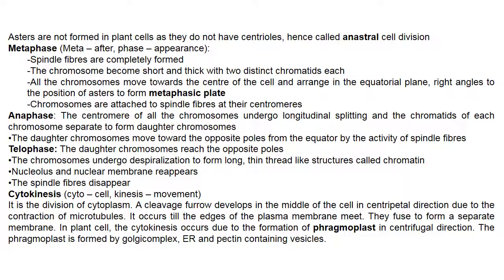Metaphase asters are not found in plant cells as they do not have centrioles, hence called anastral cell division. In metaphase of mitosis, 'meta' means after and 'phase' means appearance. Spindle fibers are completely formed, chromosomes become short and thick with two distinct chromatids each. All chromosomes move towards the center of the cell and arrange in the equatorial plane at right angles to the position of asters, forming the metaphasic plate. Chromosomes are attached to spindle fibers at their centromeres.